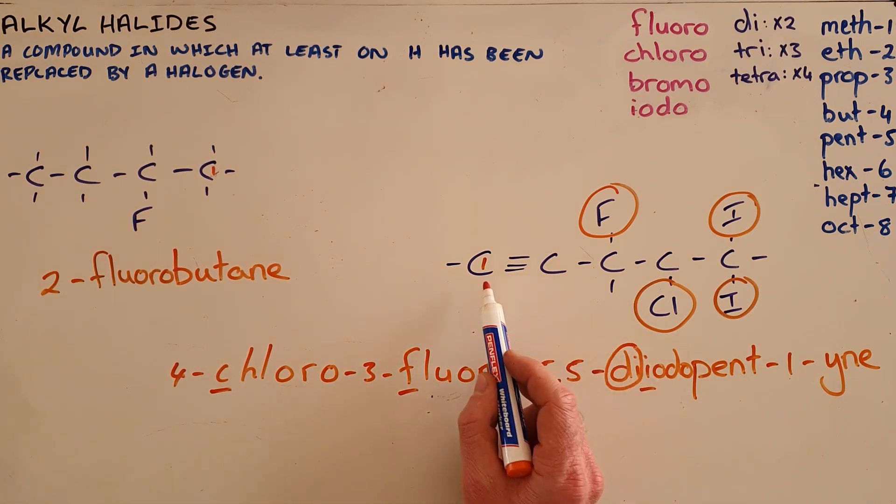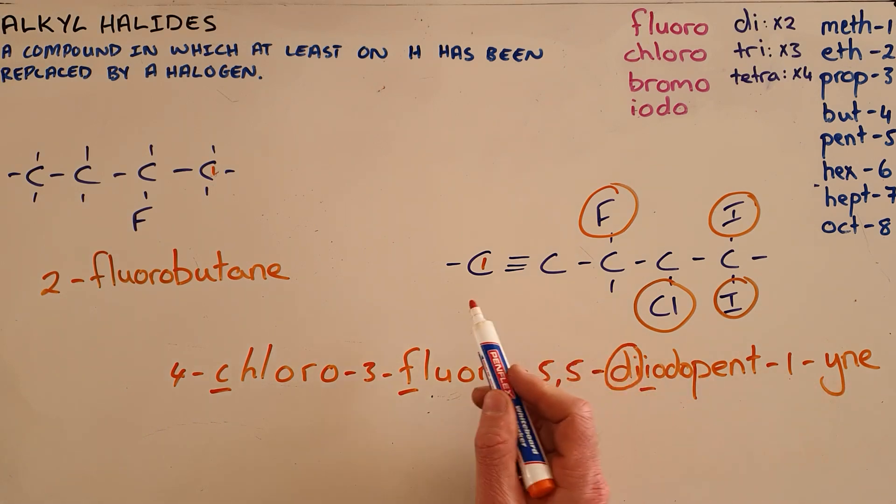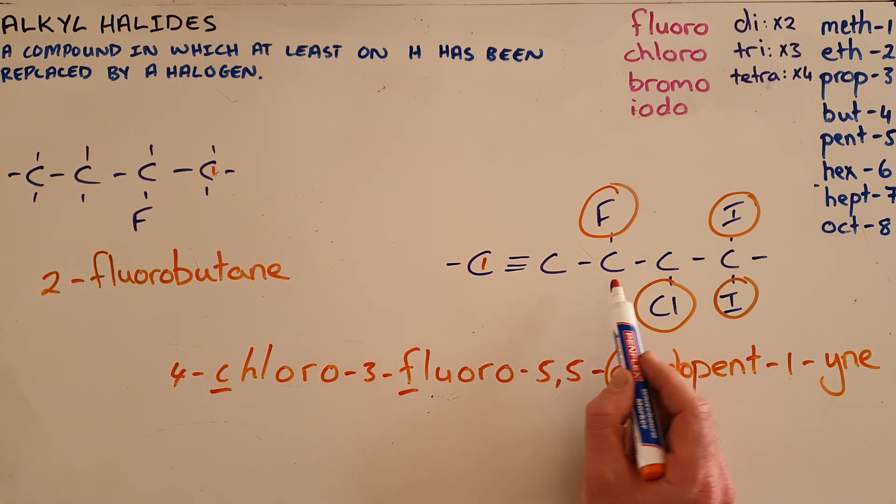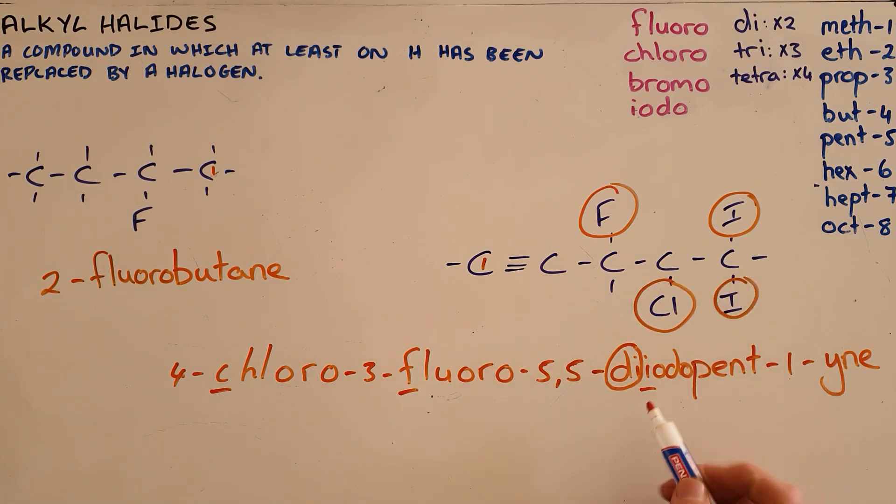Once we have chosen to number from the left-hand side for our alkyne, we must keep that numbering. This is why this is carbon number three, carbon number four, and carbon number five. It is important to identify that both iodines are on the fifth carbon: 5,5-. It is not acceptable to leave this as simply 5-diiodopent-1-yne.